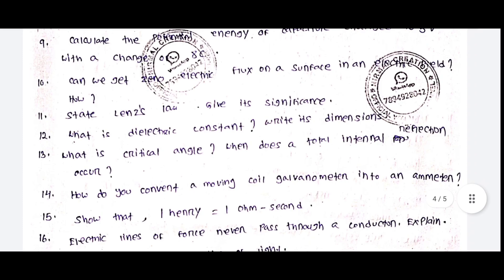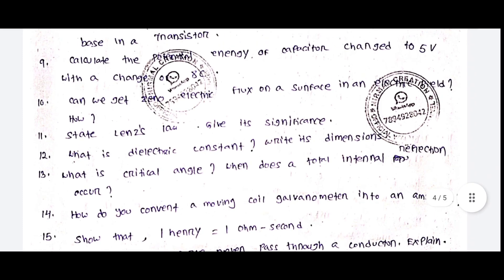Can we get zero electric flux on a surface in an electric field? How?